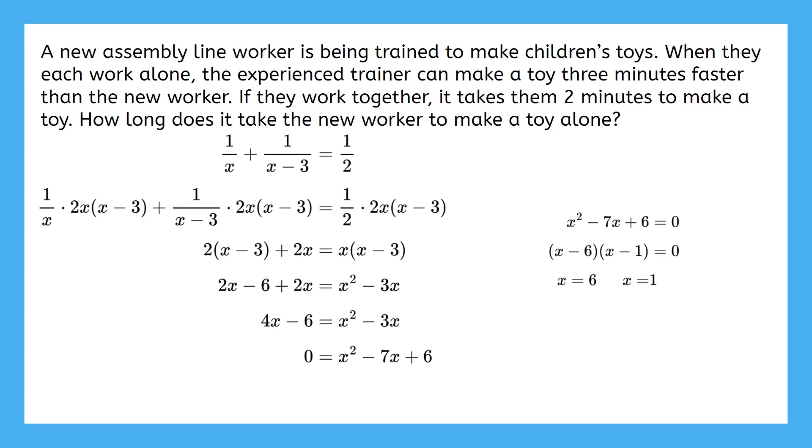Now, while neither of these gives us an extraneous solution, one of them doesn't make sense within the scenario. These are the possible answers of the new worker's time to complete the toy, and the experienced trainer takes three minutes less. So if six is the answer and we subtract three, the experienced trainer can make a toy in three minutes. This would be a logical time for the more experienced employee because it would make sense that he would take three minutes by himself and only take two minutes with a helper.